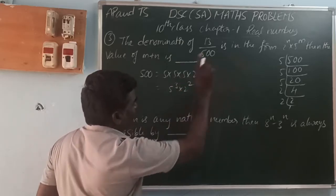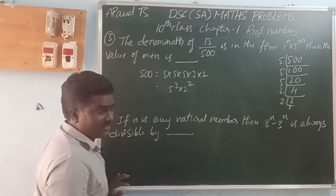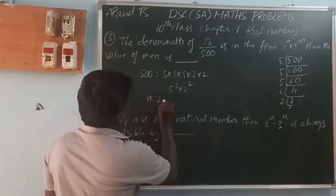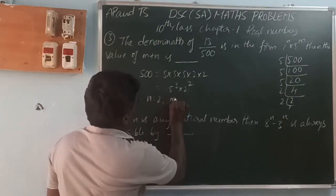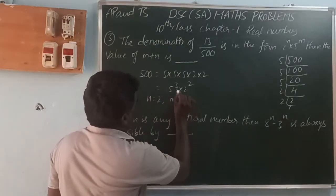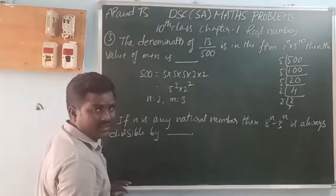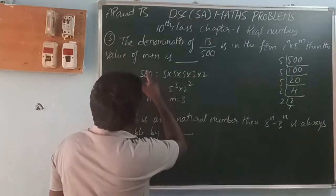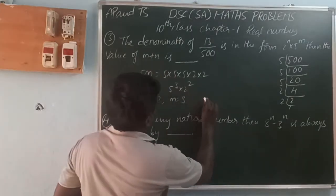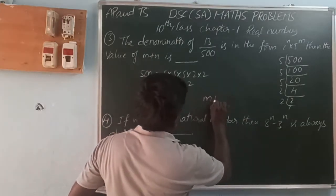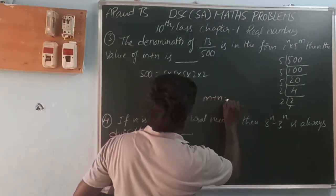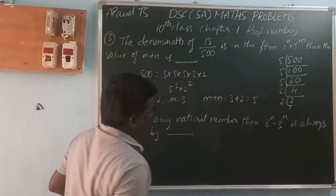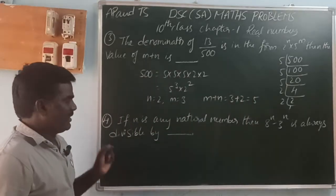In the formula 2 power n times 5 power m, the n value is 2 and the m value is 3. So m plus n equals 3 plus 2, which equals 5.